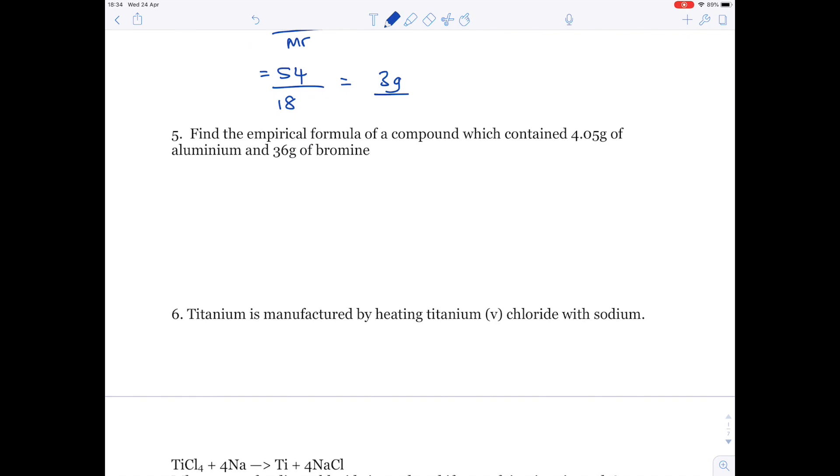Five: Find the empirical formula of a compound which contained 4.05 grams of aluminium and 36 grams of bromine. So, use the table format here. So, AL and BR.